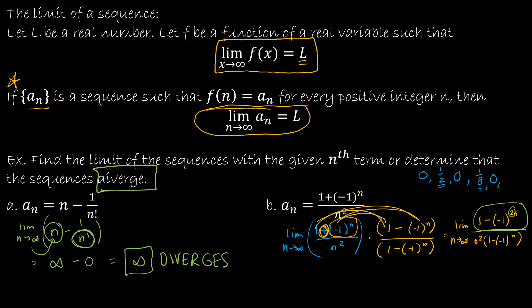So essentially, what happens is I have the limit as n approaches infinity of 1 minus negative 1 to the 2n — and we said negative 1 to any even power is always going to be 1. So I have 1 minus 1 over n squared, divided by 1 minus negative 1 to the n. And 1 minus 1 is 0, so it doesn't matter what the denominator is — my limit is 0.